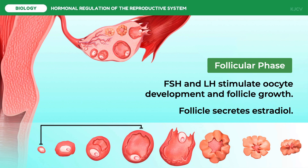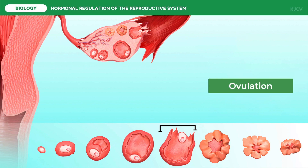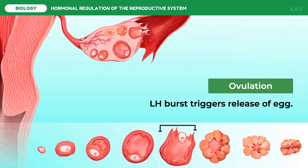One of the follicles, the dominant follicle, usually grows more rapidly than the others, developing into a mature pre-ovulatory follicle within about 14 days. The dominant follicle generally has the most FSH receptors and is therefore most responsive to hormonal stimulation. The greatly expanded mature follicle bulges on the ovarian surface, creating a thin area that ruptures to release the oocyte at ovulation. Rupture of the follicle is facilitated by a burst in LH secretion from the follicular cells, which digests the connective tissue in the follicular wall until the follicle can no longer contain its rapidly expanding contents.